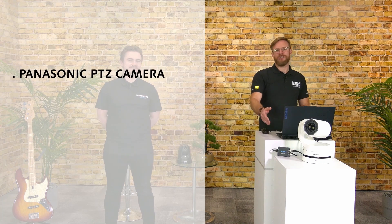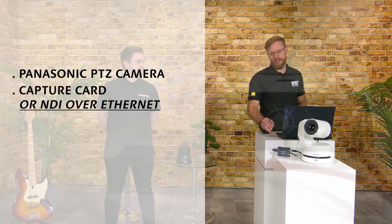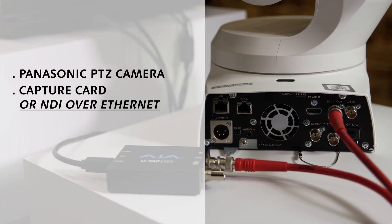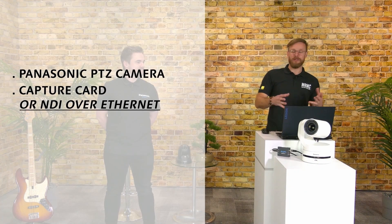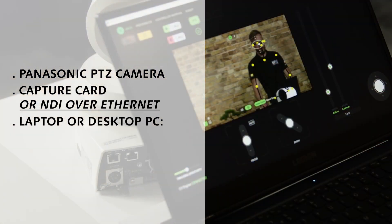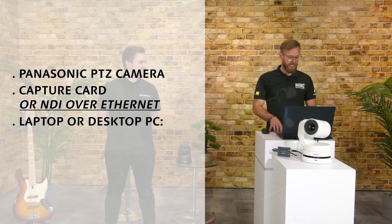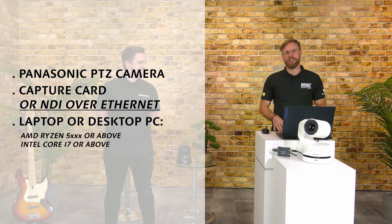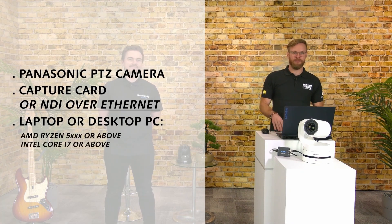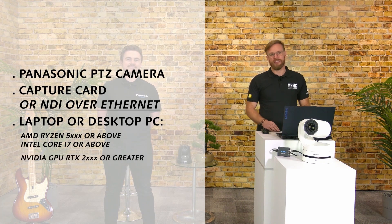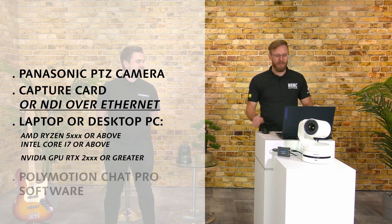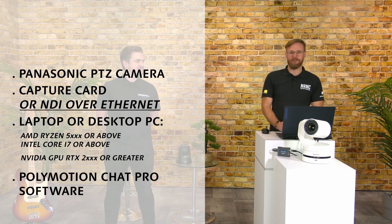So Sascha, what do we need to get started with this setup? It's actually really simple. Of course we need our Panasonic PTZ, we need a way to ingest the video — here we have an AJA U-Tap taking 3G SDI into USB — and then we need a laptop capable of running the system. In this case we have an AMD Ryzen 5000 series processor, but you can also use an Intel i7 or better, and you need an Nvidia RTX graphics card; both the 2000 and 3000 series are supported.